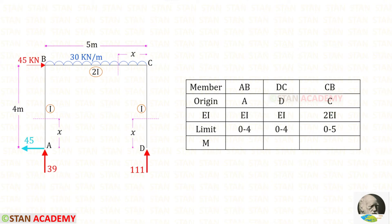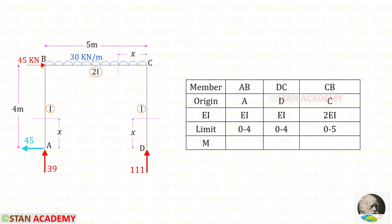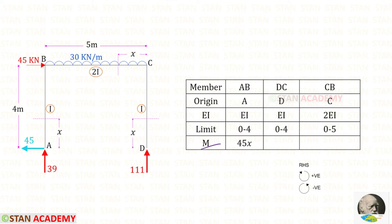Now let us enter the flexural rigidity EI. For AB and DC the moment of inertia is I, so the flexural rigidity will be EI. For CB the moment of inertia is 2I, so the flexural rigidity will be 2EI. Now let us enter the limits. For AB it is 0 to 4; for DC it is 0 to 4; and for CB it is 0 to 5.